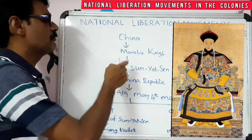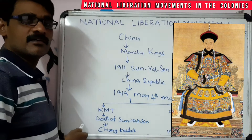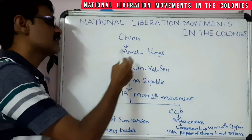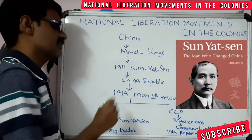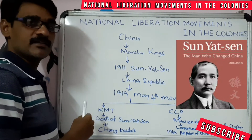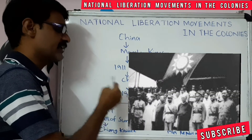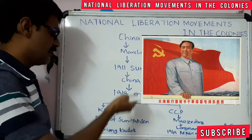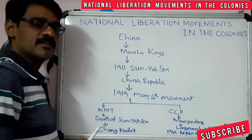First, China was under the Manchu kings — the emperors of the Manchu dynasty. In 1911, under the leadership of Sun Yat-sen, the people revolted. Then after the First World War, especially after the Treaty of Versailles in 1919, a May 4th movement took place in China. The KMT and the Chinese Communist Party were the major parties at that time.